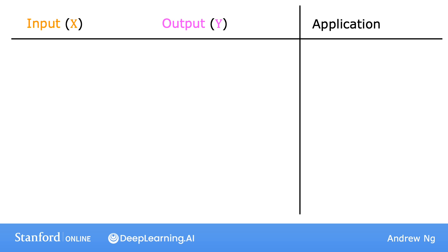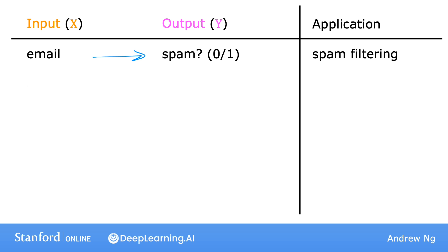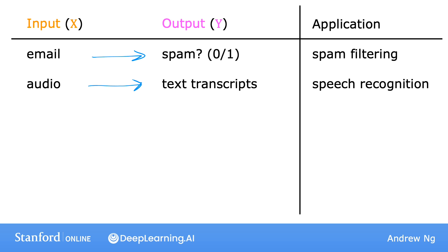Let's look at some examples. If the input x is an email and the output y is whether this email is spam or not spam, this gives you your spam filter. Or if the input is an audio clip and the algorithm's job is to output the text transcript, then this is speech recognition.